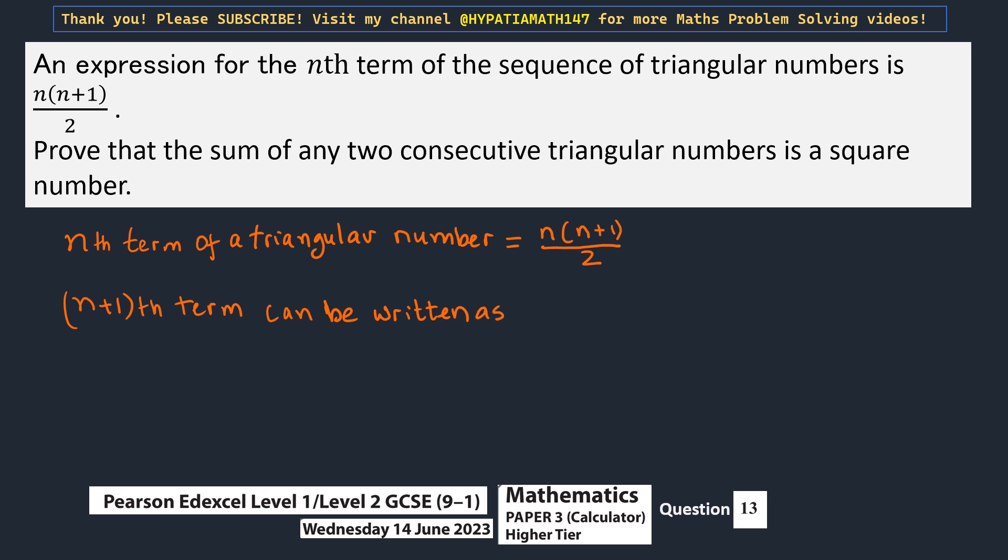The n plus 1th term can be written as, instead of this n, you're going to replace it with n plus 1. So if you did that, what you would get is n plus 1, so instead of this n you have n plus 1, and instead of this n here you again put n plus 1. So n plus 1 times n plus 1 plus 1, that remains as it is, out of 2. So that would give you n plus 1 times n plus 2 out of 2. This is the n plus 1th term, and it makes perfect sense.